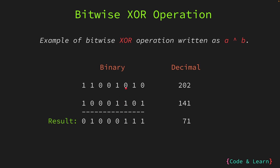Next we have 1 and 1 — since both bits are set, the result is 0. Next we have 0 and 1 — since only one bit is set while the other is unset, the result is 1. Next we have 1 and 0 — again only one bit is set, the result is 1. Next we have 0 and 1 — again only one bit is set, the result is 1. So after performing the XOR operation on each corresponding pair of bits, the resultant binary number is 01000111, or decimal 71.